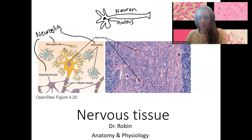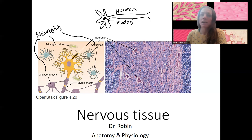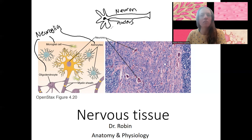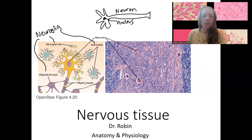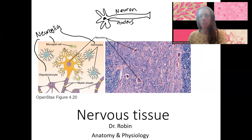Neuroglia are supporting cells — also very important. They are getting more credit as we learn more about their importance in regulating the environment for neurons, helping neurons migrate and grow and connect the right way, send signals, regulate the composition of the extracellular fluid, and create the myelin sheath. The myelin sheath is made by oligodendrocytes or Schwann cells, depending on whether you're talking about the central or peripheral nervous system — brain and spinal cord versus the peripheral nerves.